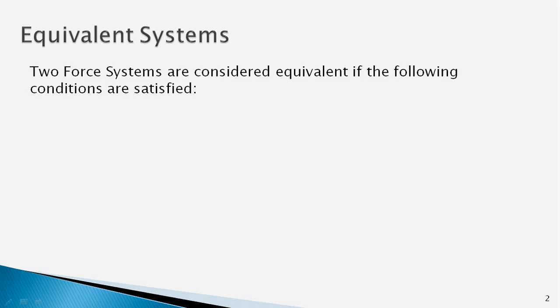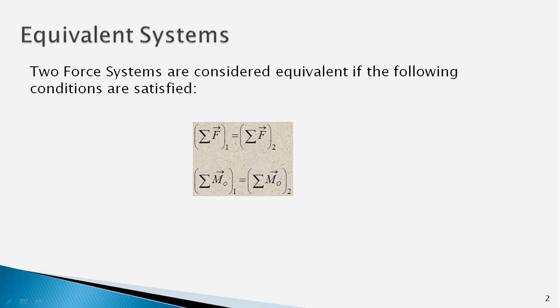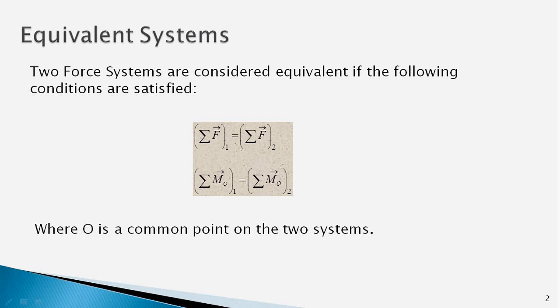Welcome back. In this video, you will learn about equivalent force systems. Two force systems acting on a body are considered equivalent if the following conditions are satisfied: the vectorial sum of all forces in system 1 equals that in system 2, and the moment of all forces about any arbitrary point O in system 1 equals the moment about the same point in system 2. The replacement of one system with an equivalent system is often used to simplify or solve mechanics problems.